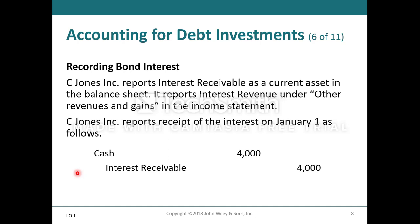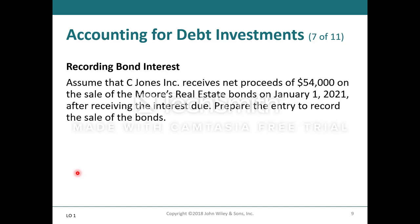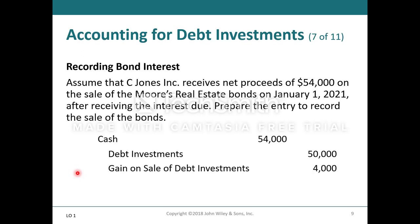This is very similar to the interest activity from the bonds of the previous chapter. Assume that C Jones Incorporated receives net proceeds of $54,000 on the sale of Moore's Real Estate bonds on January 1st, 2021, after receiving the interest due. The entry to record the sale is a debit to cash for $54,000, a credit to debt investments for $50,000 to remove it from the books, and a gain on sale of debt investments for $4,000.